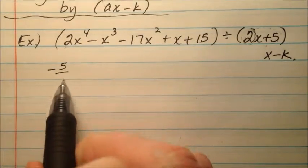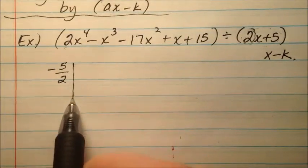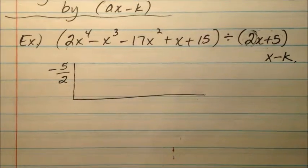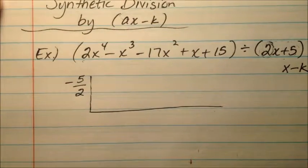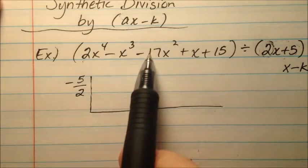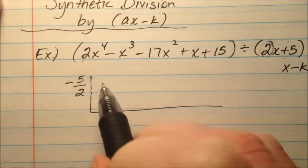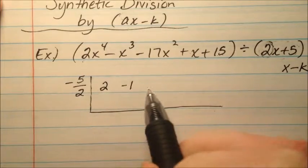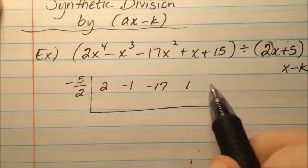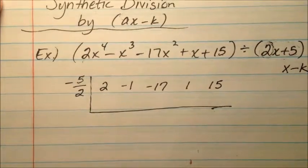It looks like my negative 5 halves is out front, is my little division bar here. And then I'm concerned, if you remember, with the coefficients of my dividend polynomial here: 2, negative 1, negative 17, 1, and 15.